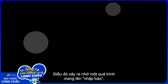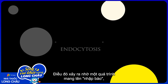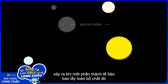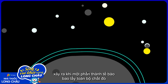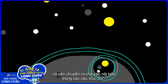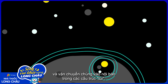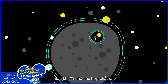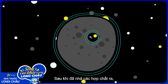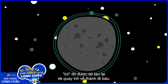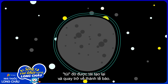That happens through a process called endocytosis, in which sections of the membrane engulf substances and transport them into the cell as vesicles. Once the contents have been released, the vesicles are recycled and returned to the cell membrane.